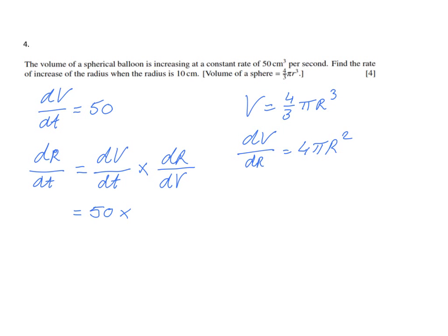And they tell me to do it for when the radius is 10. So for when the radius is 10, it's going to be 4 pi, 10 squared, 100, 400 pi. So for when the radius is 10, dV/dr is 400 pi.